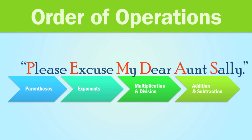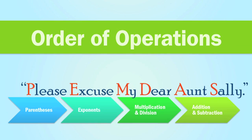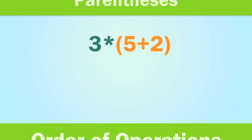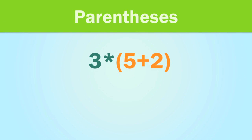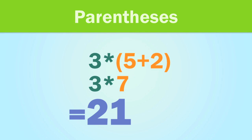Let's go over each of these in a little more detail. In this formula, 5 plus 2 is in parentheses, so we'll calculate that first to get 7. And then we can just multiply 3 times 7 to get 21.